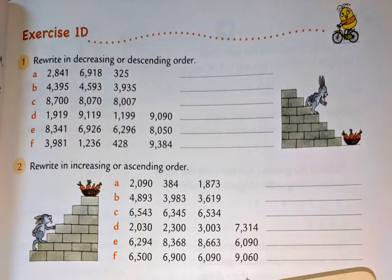Exercise 1D is about ascending and descending order. Question 1 is to rewrite numbers in descending order, writing each number in the blank with space between them. I'm sure you will be able to do questions 1 and 2 very easily.